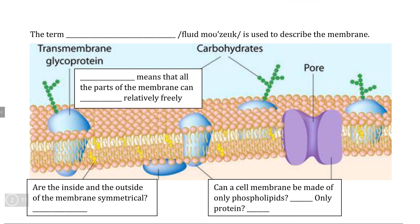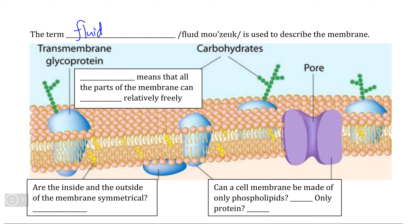Taken as a whole, the cell membrane is a complex mixture of both phospholipids and cholesterol, many different structures of proteins, and even carbohydrates that appear on the glycoproteins, particularly those found on the outside. We use the term fluid mosaic to describe this complex mixture of biomolecules that compose the cell membrane, and we can look at the significance of each of these words individually.